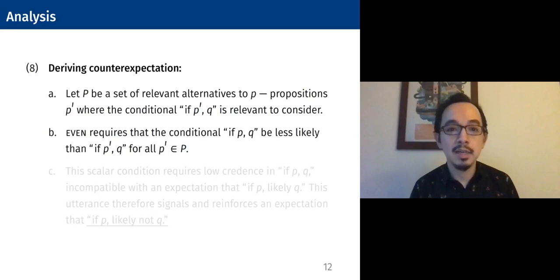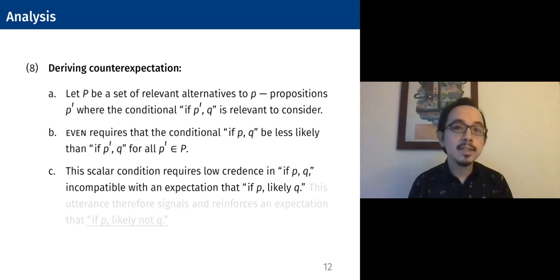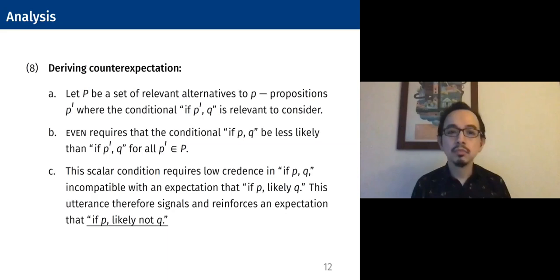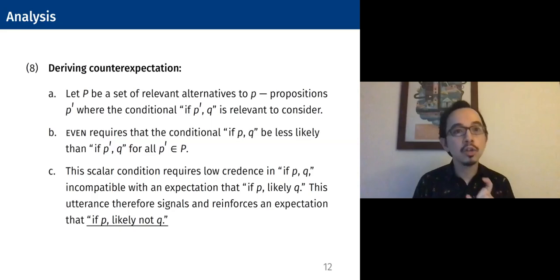This scalar condition requires low credence in 'if P, Q' — it has to be less likely than all those other possibilities. Therefore, that's incompatible with an expectation that if P it's likely Q. And therefore this utterance 'yinang Q' is going to signal and reinforce an expectation that the speaker has that if P it's likely not Q. So using the scalar particle 'even' together with the conditional meaning, we can derive this counter-expectational flavor.